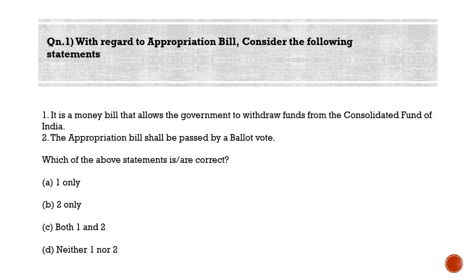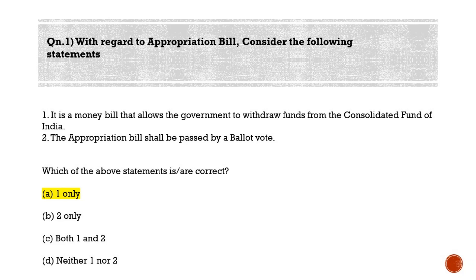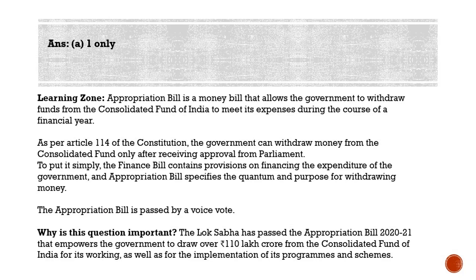The correct answer is Option A — one only. It is a money bill that allows the government to withdraw funds from the Consolidated Fund of India to meet its expenses during a financial year. As per Article 114 of the Constitution, the government can withdraw money from the Consolidated Fund only after receiving approval from Parliament. The finance bill contains provisions on financing expenditure, while the Appropriation Bill specifies the quantum and purpose for withdrawing money.